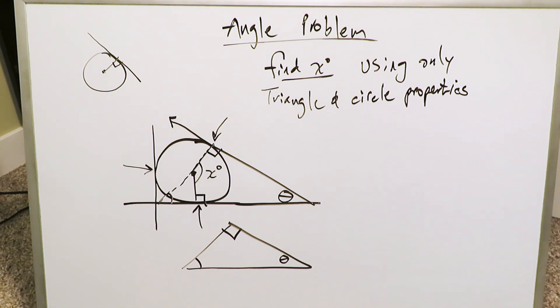The sum of the three angles inside a triangle are 180. If one is 90 and the other one is theta, then that must be 90 minus theta. Because these two would be complementary to that. This angle right here must be 90 minus theta. Therefore, 90 minus theta represents this angle right here.